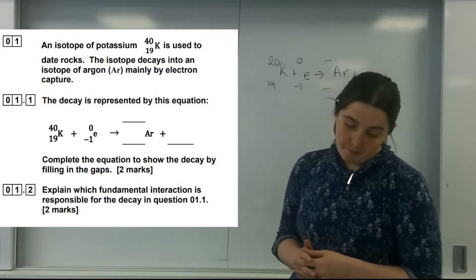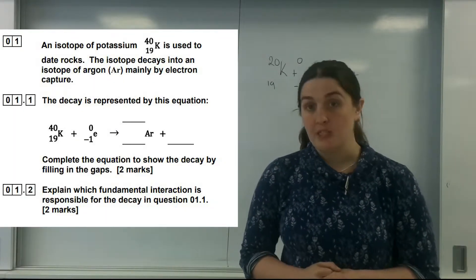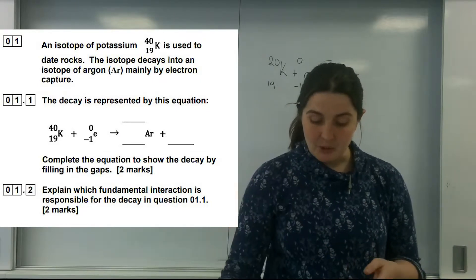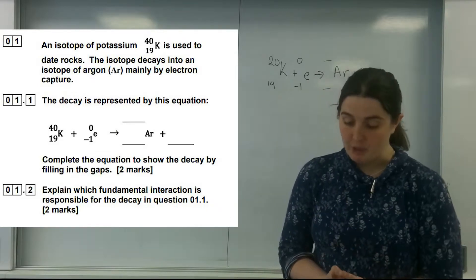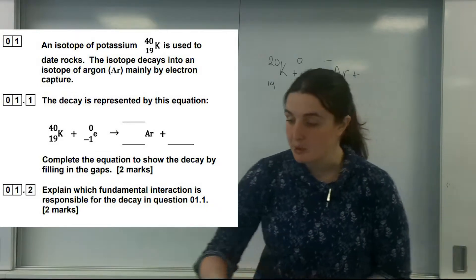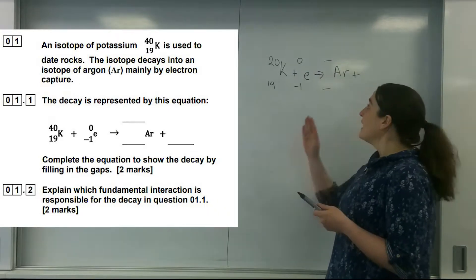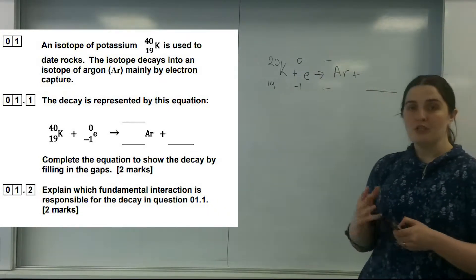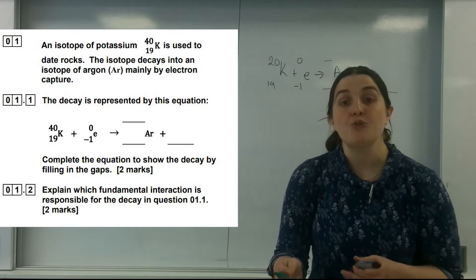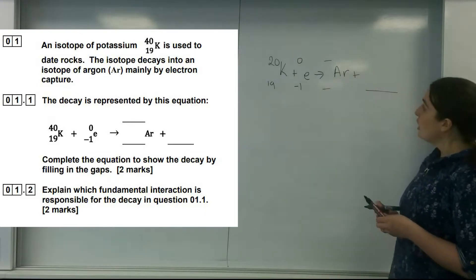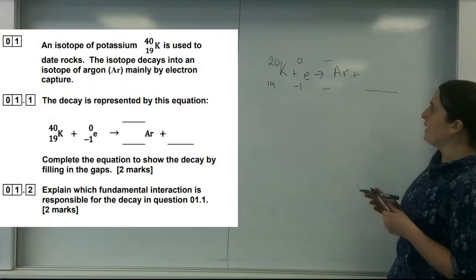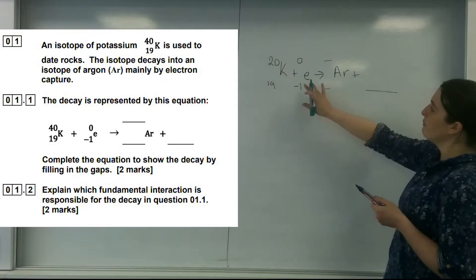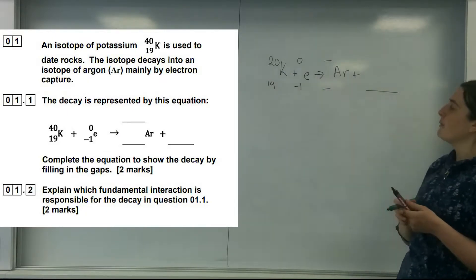Question 1 states: an isotope of potassium, 40-19, is used to date rocks. The isotope decays into an isotope of argon, mainly by electron capture. The decay is represented by an equation with gaps on your data sheet, and the question asks you — for two marks — to fill in the blanks. So we've got potassium, represented by K, decaying by gaining an electron and becoming argon.